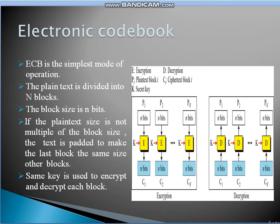Firstly, ECB — Electronic Code Book. What is ECB? ECB is the simplest mode of operation. The plain text is divided into a number of blocks. The block size is divided into n bits, meaning the number of bits is dependent on the size of the message. If the plain text size is not a multiple of the block size, padding is added to make the last block the same size as the others.